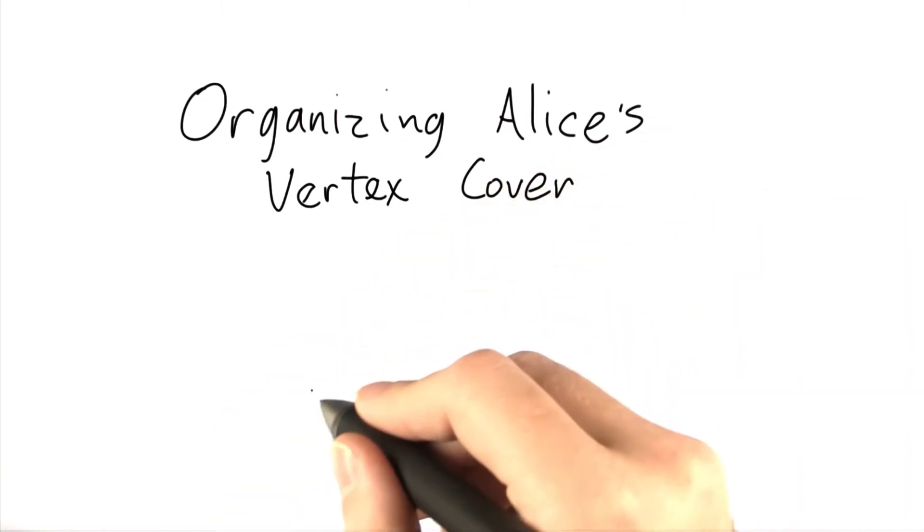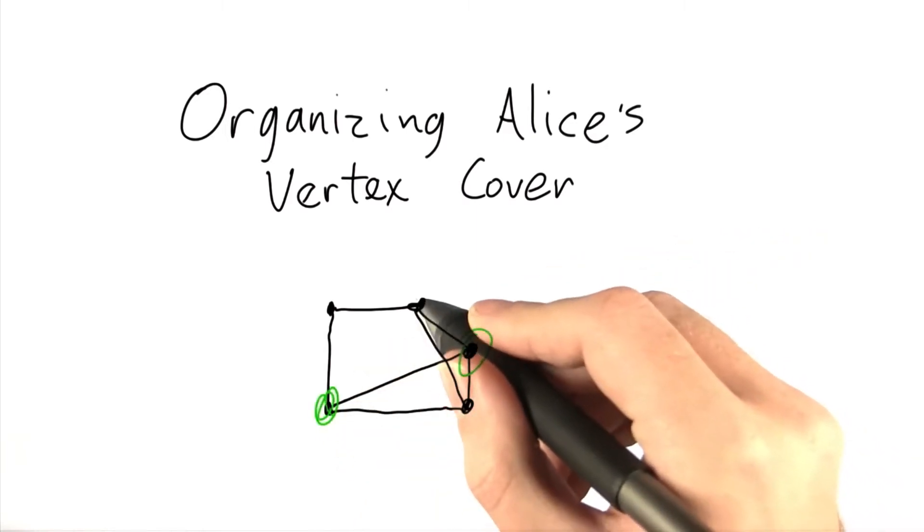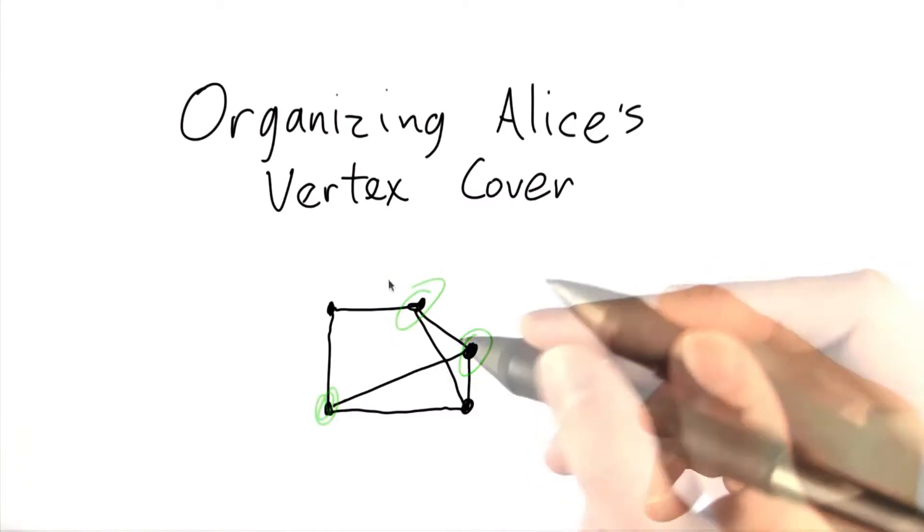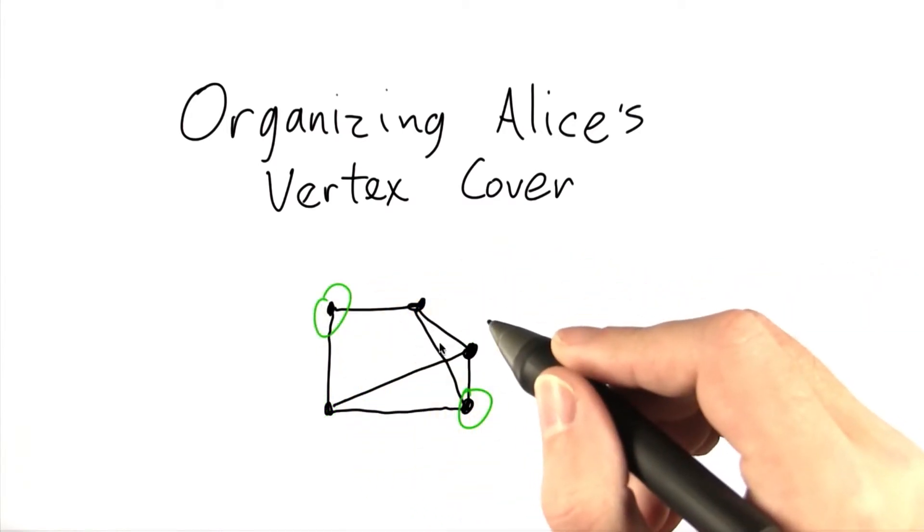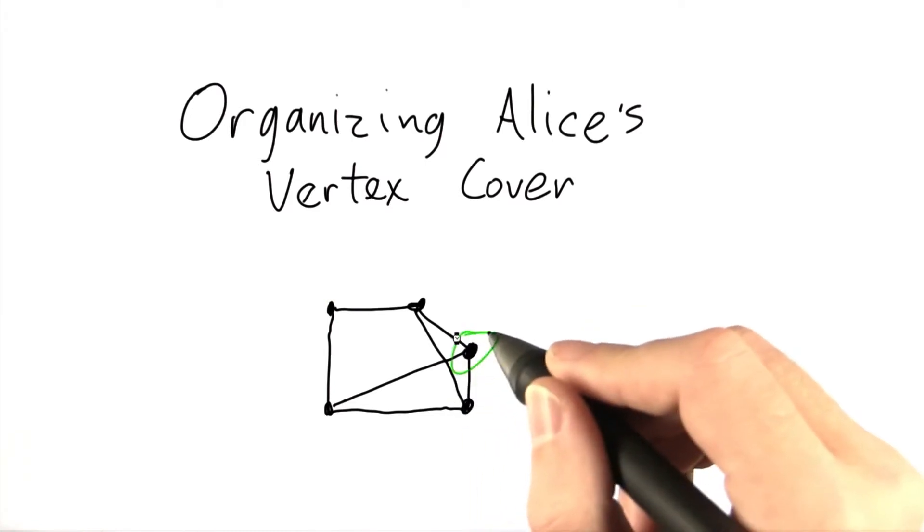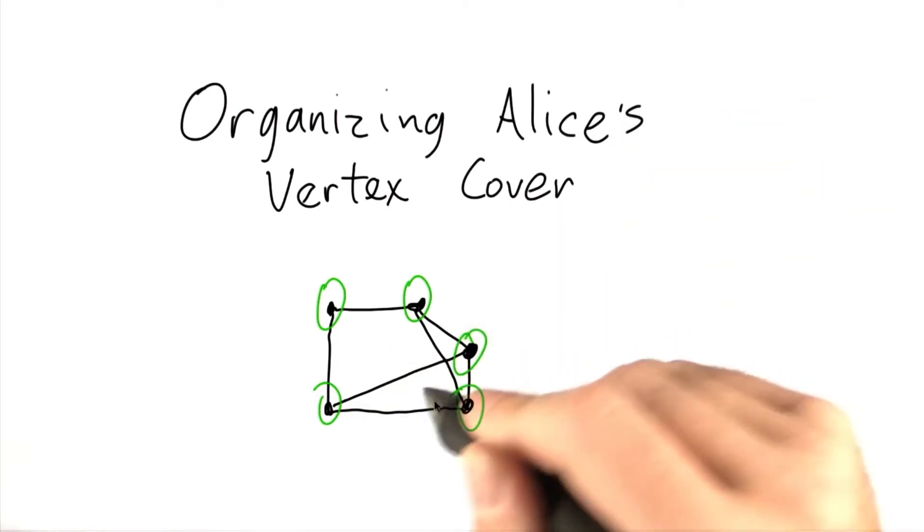So for let's say that graph, we might try this, this, and this. Or we might try this, this, and this. Or just this. Or maybe all of the vertices.